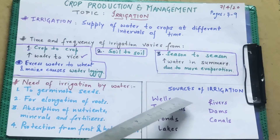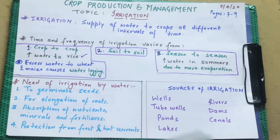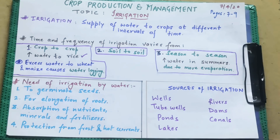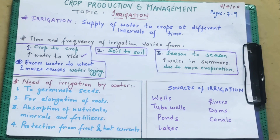फिर है rivers — नदियों से पानी आएगा। Dams — बांध, मतलब बड़ी-बड़ी नदियों का पानी एक जगह दीवार की help से रोक लिया जाता है और फिर उस पानी को खेतों की तरफ direct कर देते हैं, ताकि हमेशा पानी मिलता रहे crops को। फिर है canals — नहर, मतलब rivers से छोटी-छोटी लंबी गढ़ों के रूप में pipeline खेतों तक पहुँचाई जाती है। इसे canals कहते हैं।